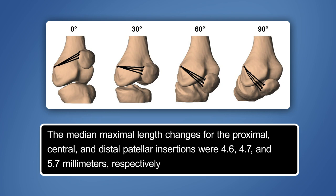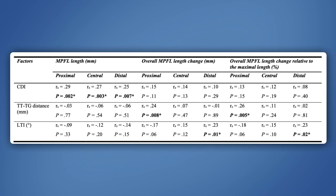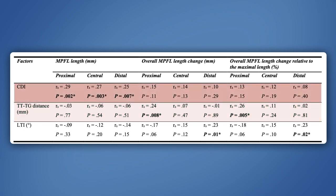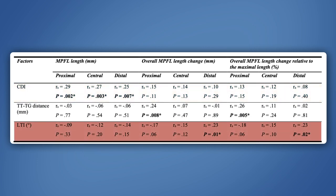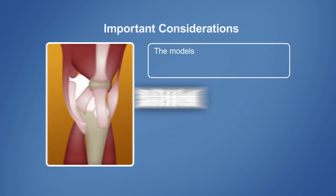However, these values correlated only weakly, or not at all, with the tibial tuberosity trochlear groove distance, the Caton-Deschamps index, and the lateral trochlear inclination.